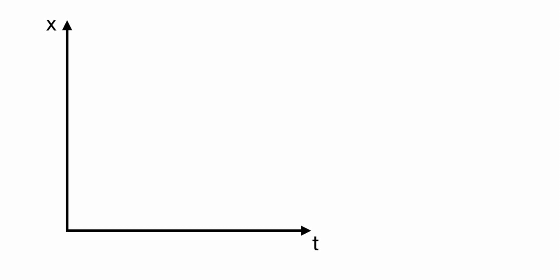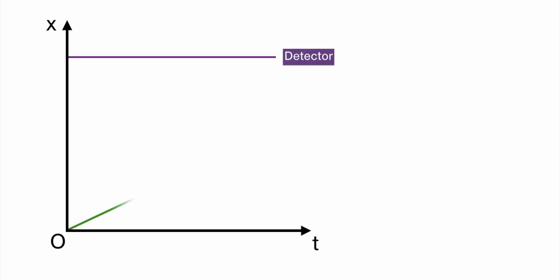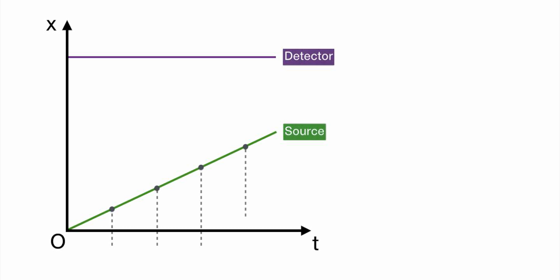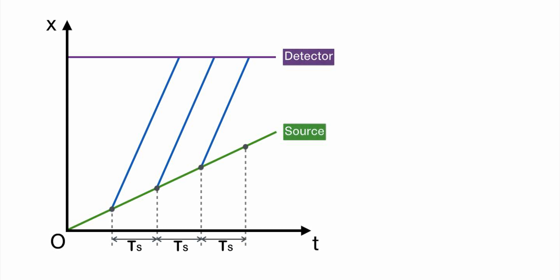Let's draw the position-time graph for the case where the detector is at rest and the source is moving. The detector is at rest, away from the origin O by x. The source is moving toward the detector from the origin O with a constant velocity. The source is emitting a sound with a regular interval. The period of emission is Ts.